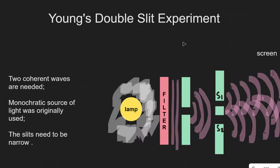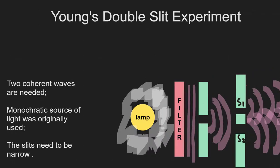Let's revise Young's double slit experiment in physics. This video is suitable for all exam boards. This story actually starts with Isaac Newton, who originally thought that light was a particle. Huygens, on the other hand, thought that light was indeed a wave, similar to a water wave.